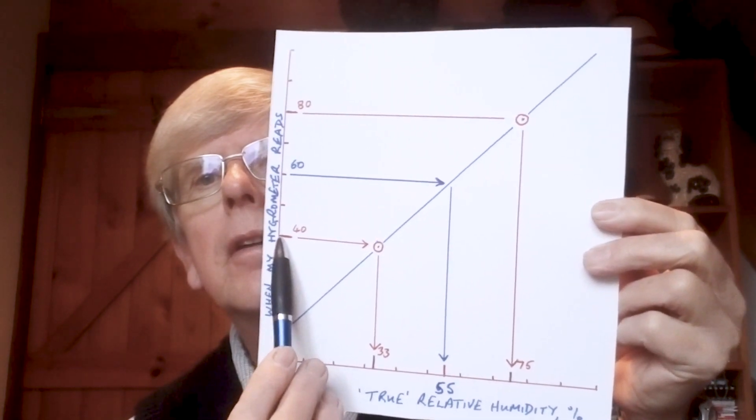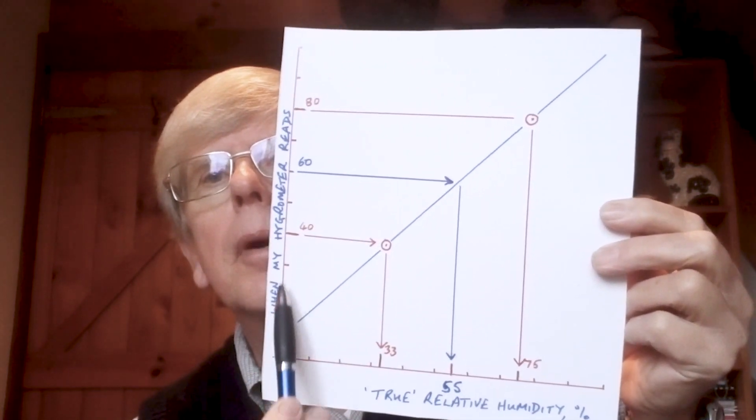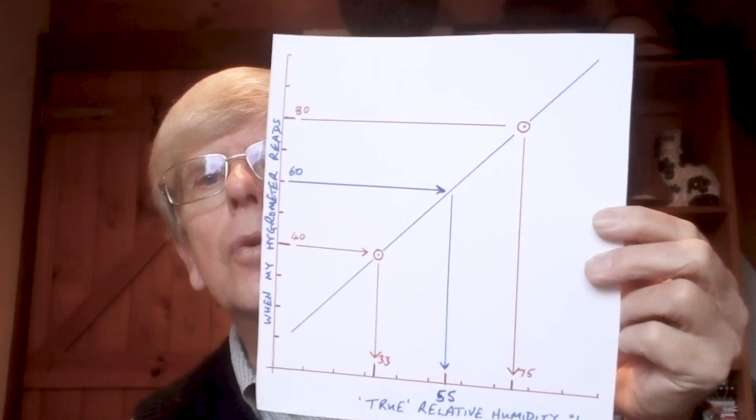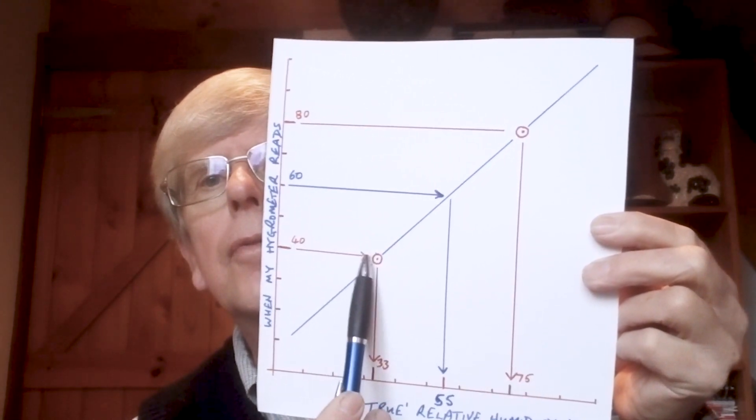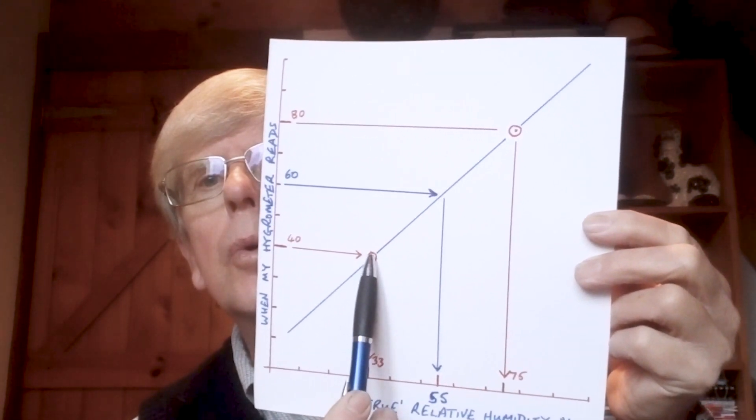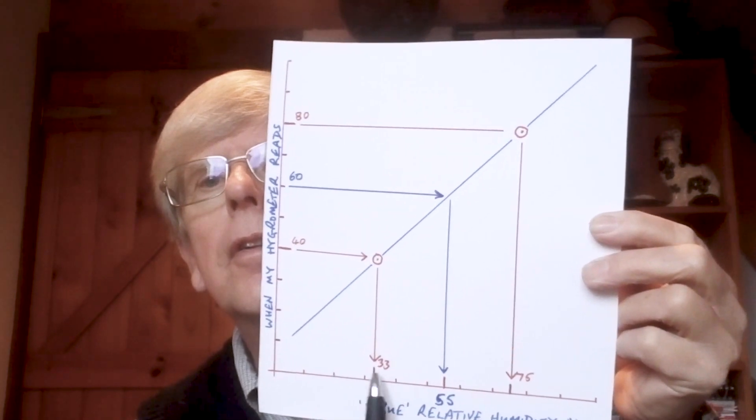We put our hygrometer into that environment, and it reads 40. This is what I've got here, my hygrometer reads 40. And so we plot that on a graph, 40, point with the coordinates of 40 and 33.